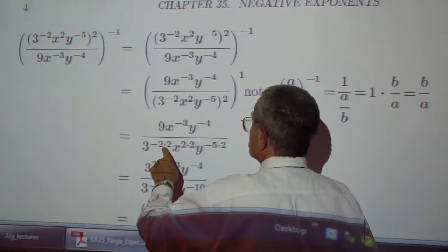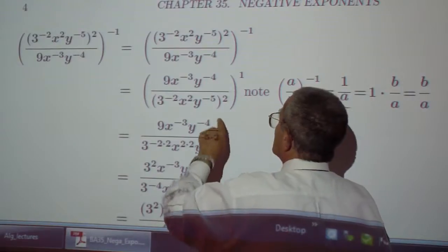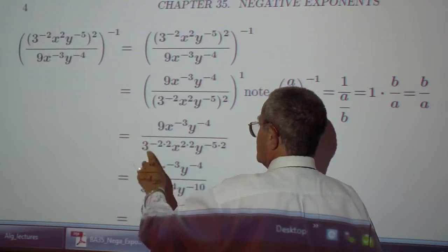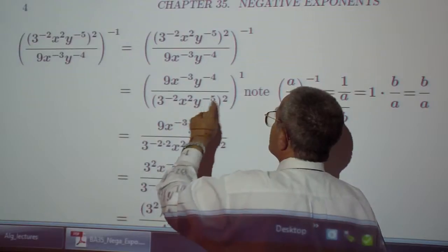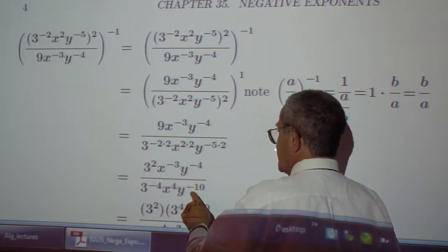Why is that 2 times 2? Because that is squared, alright. So this outside exponent times the inside exponent, that's 3 to the negative 4, x to the positive 4, and y to the negative 10.